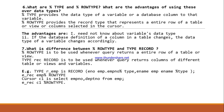The next question is: what is the difference between %ROWTYPE and TYPE RECORD? %ROWTYPE is used when a query returns the entire row of a table or view. TYPE RECORD is to be used whenever a query returns columns of different tables or views and variables. An example is provided on the slide.